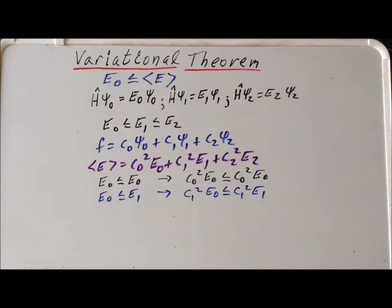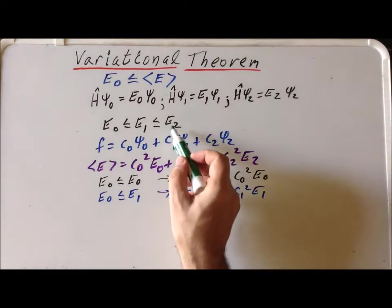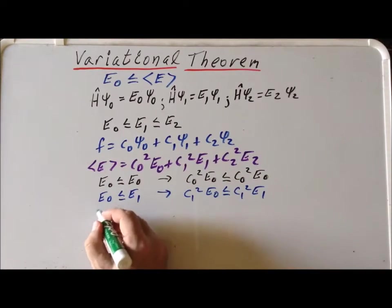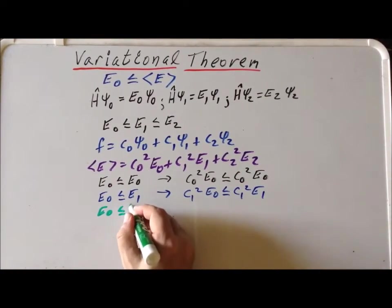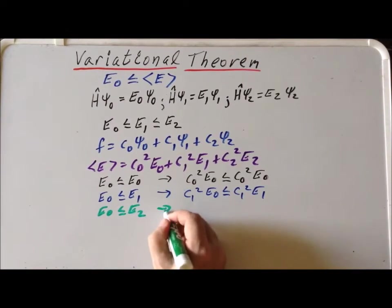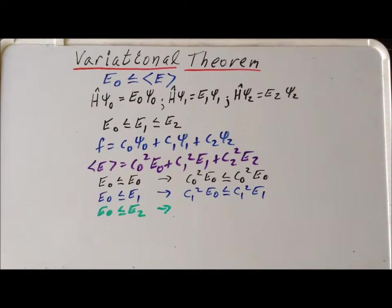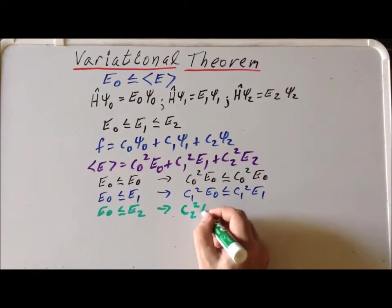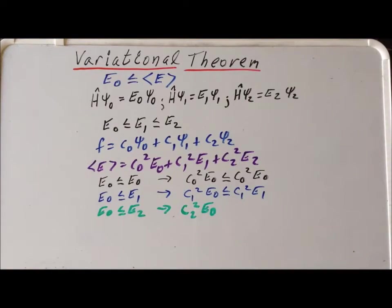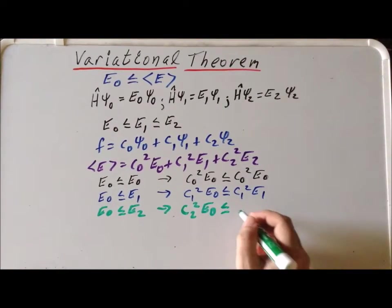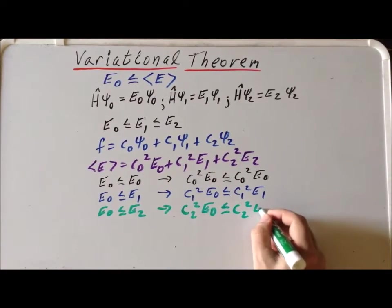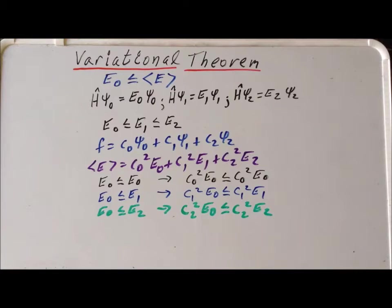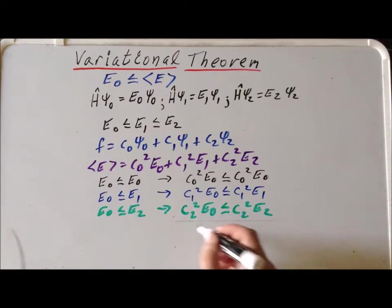Next, we use the fact that E sub 2 is greater than E sub 0. Now we're going to multiply each side of this inequality by C sub 2 squared, so we have C sub 2 squared times E sub 0 is less than or equal to C sub 2 squared times E sub 2. It may not be clear where we're going with these three inequalities, but what we can do is add them all together.